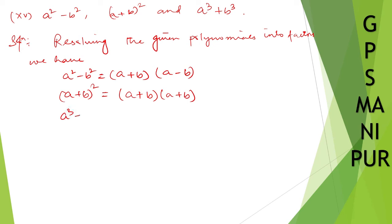And a cube plus b cube. This one you can write down as a plus b, a square minus ab plus b square.